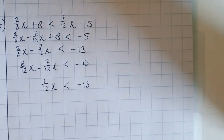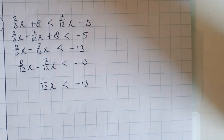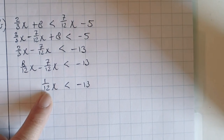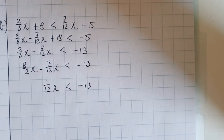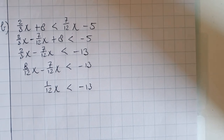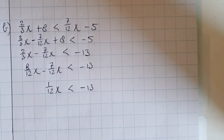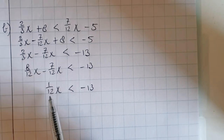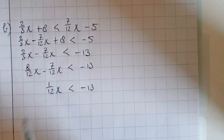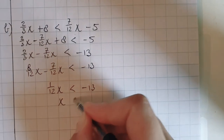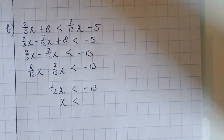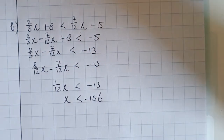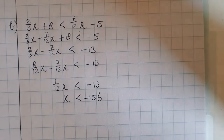Now divide by the number in front of the x — divide by 1 twelfth on both sides. If you divide by a fraction, it's actually doing times the opposite of the fraction, so that's doing times 12. 1 twelfth times 12 is 1. And minus 13 times 12 is minus 156. So x is smaller than minus 156.